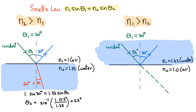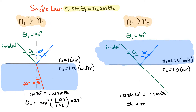Applying Snell's Law: N1 sine theta 1 — N1 for this case is 1.33 — so we get 1.33 multiplied by sine of 30 degrees, has to be equal to N2, which in this case is air, multiplied by sine of theta 2. So theta 2 is arc sine of 1.33 multiplied by sine of 30 degrees. This gives us approximately 41.7 degrees.